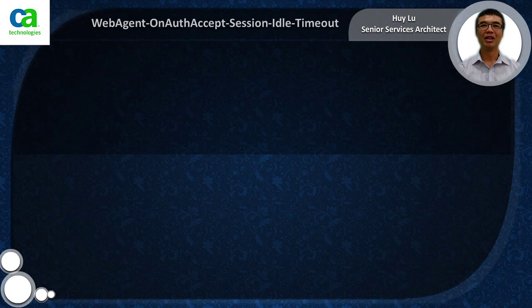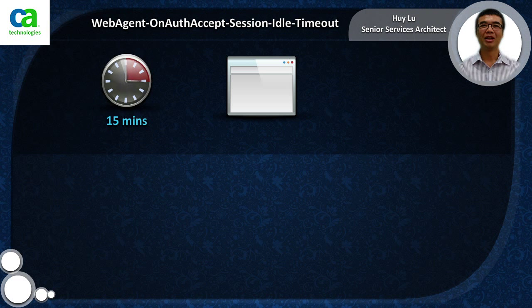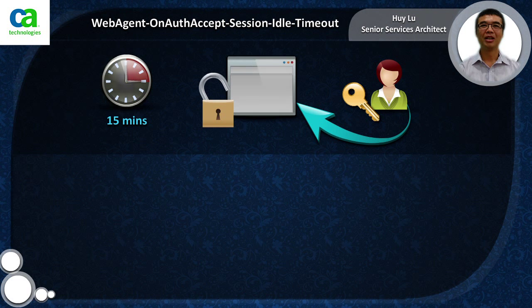The WebAgent onAuthExcept session idle timeout overrides the number of seconds a user's session can be idle. After this limit is reached, the user is forced to re-authenticate. Associate the response with a rule configured with an onAuthExcept authentication event.